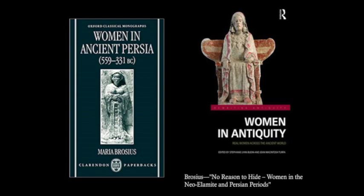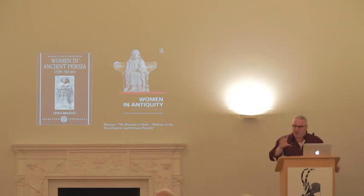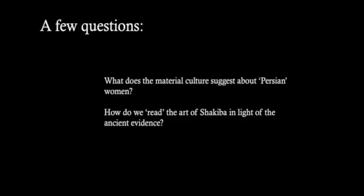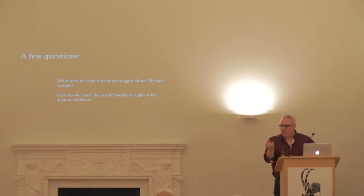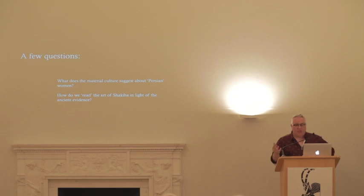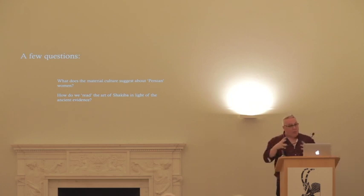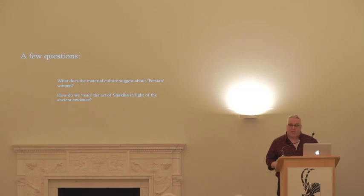As Maria Brosius has hinted at in her 1996 book 'Women in Ancient Persia' and more recently in an article called 'No Reason to Hide: Women in the Near Elamite and Persian Periods,' our investigation into the female image in Achaemenid Iran is only just beginning. Absence of evidence of course doesn't mean absence of their physical and influential presence. I want to ask two questions for this paper: first, what does the material culture suggest about Persian women? And second, what do we do with the legacy of these artifacts when they are used in the way that Shakiba uses them? I never think that ancient history is dead and done for — it is a vital subject.